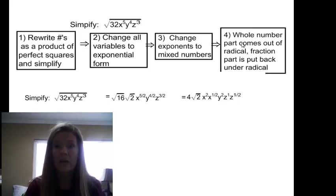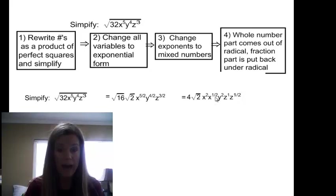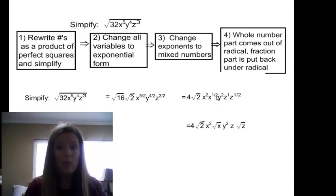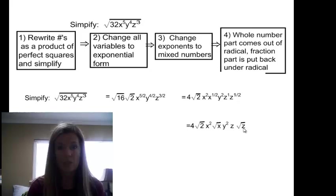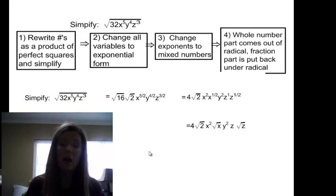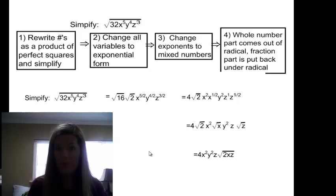Now I'm going to keep anything with a whole number part outside the radical, and any variable with a fraction exponent goes back under a radical. So the 4 drops down, the square root of 2 stays, x squared stays outside, and x to the 1 half — that denominator of 2 tells me to use a square root. Y squared drops down, z to the 1 drops down written as z, and z to the 1 half becomes the square root of z. Collecting everything outside the radical together, my final answer is 4x squared y squared z times the square root of 2xz.